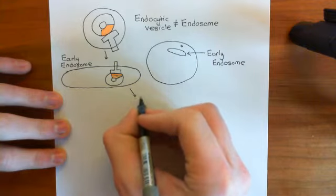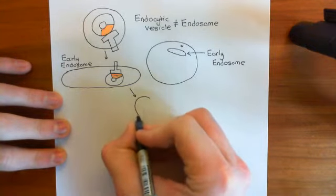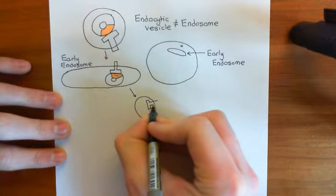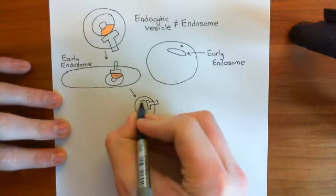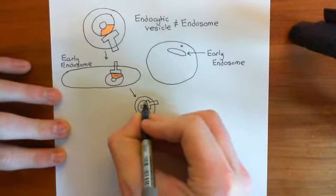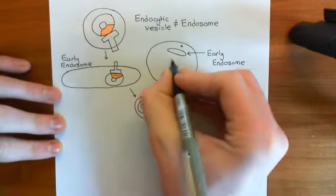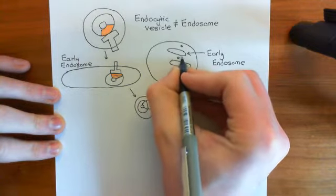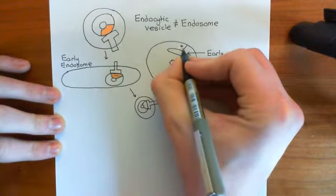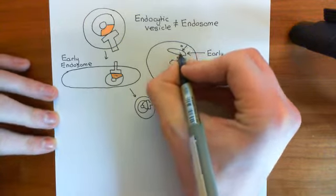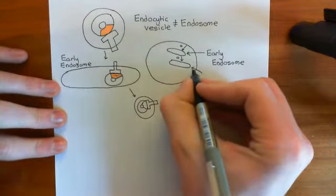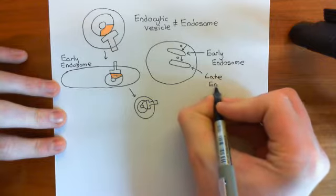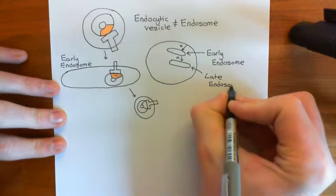Then another little vesicle will bud off the early endosome, and this will contain both the LDL receptor and its LDL cargo. We're going to ship it on to another endosome — the late endosome. So we have another endosome here, with a little vesicle going between the two: from the plasma membrane to the early endosome, and now delivering the LDL receptor with cargo from the early endosome to the late endosome.